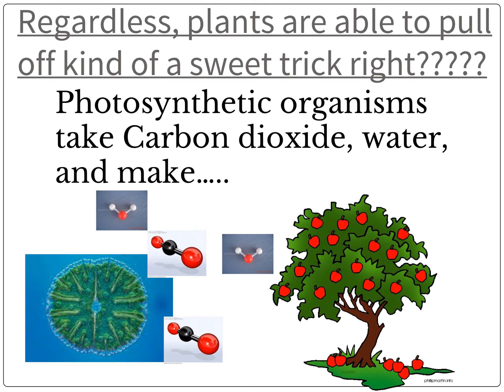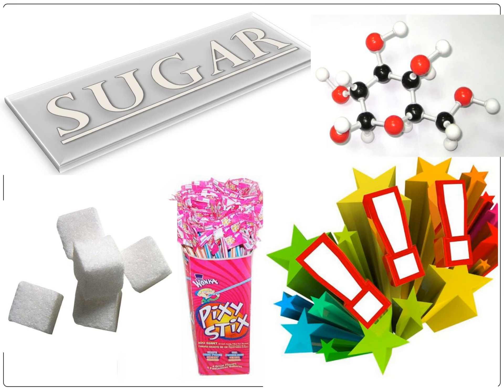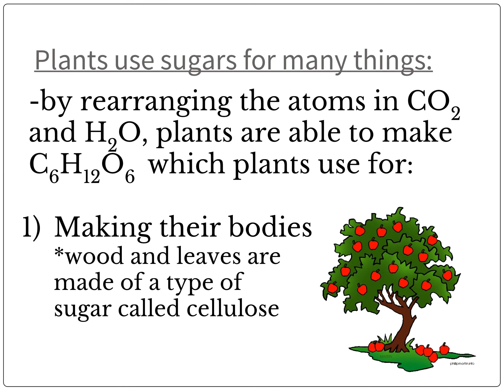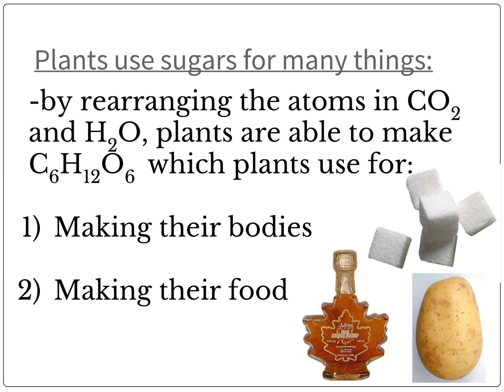Regardless, plants are able to pull off a pretty sweet trick. Photosynthetic organisms take carbon dioxide and water and make sugar. Just to recap what we learned today: plants use sugars for many things. By rearranging the atoms in CO2 and H2O, plants are able to make glucose. They use that for making their bodies — wood and leaves are both made of a type of sugar called cellulose. They also make their food with that sugar.